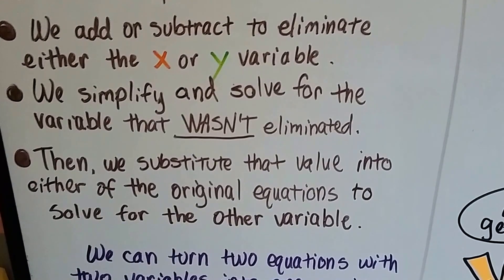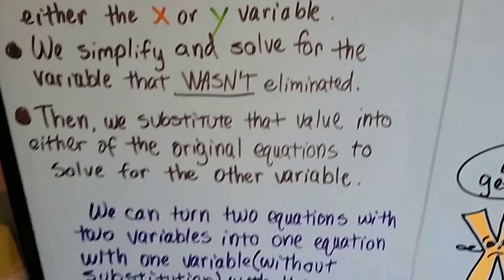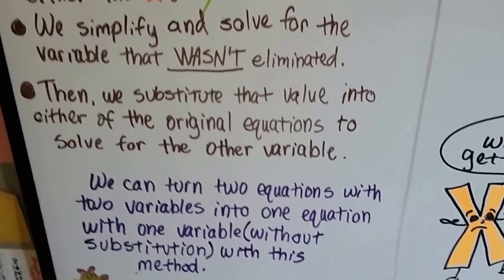Then we substitute that value into either of the original equations to solve for the other variable. We turn two equations with two variables into one equation with one variable.